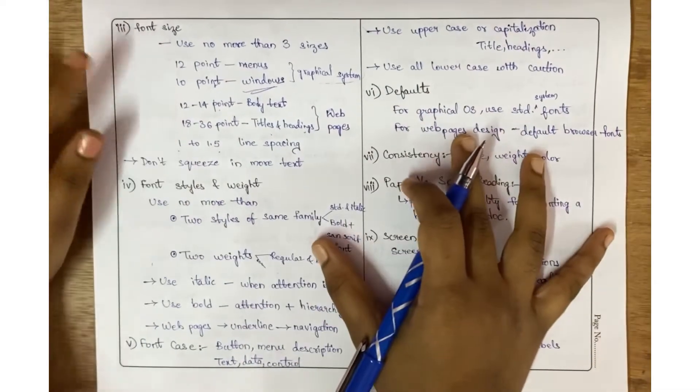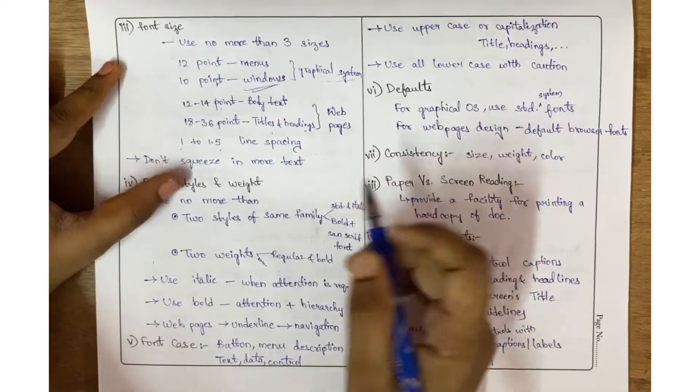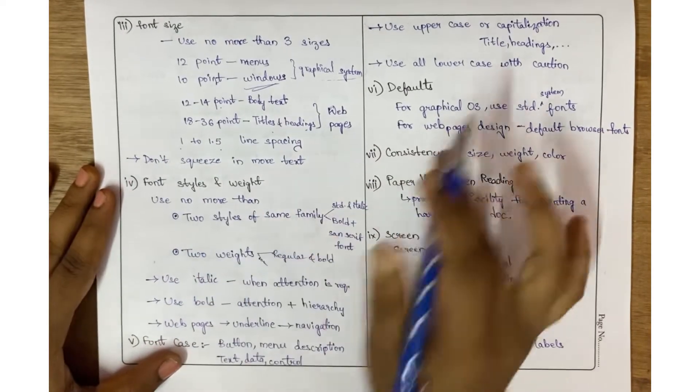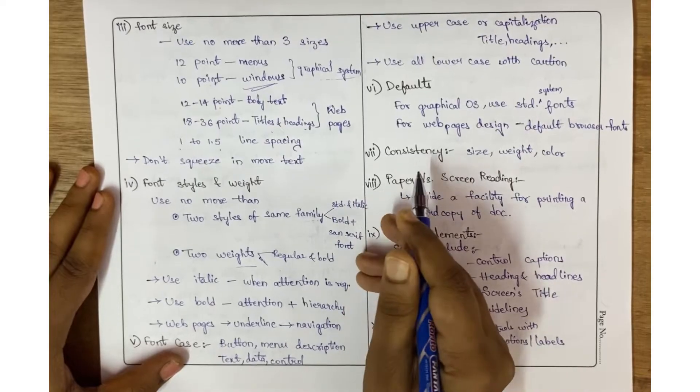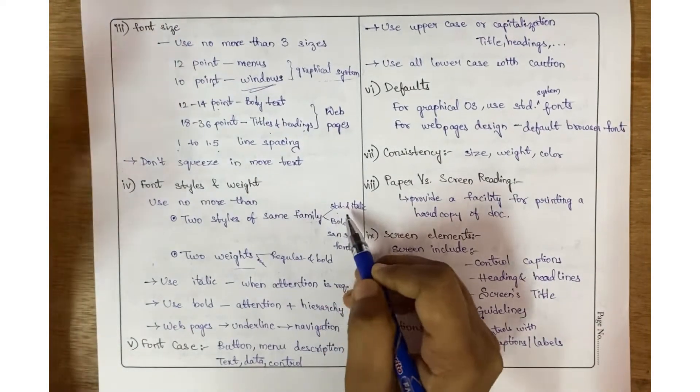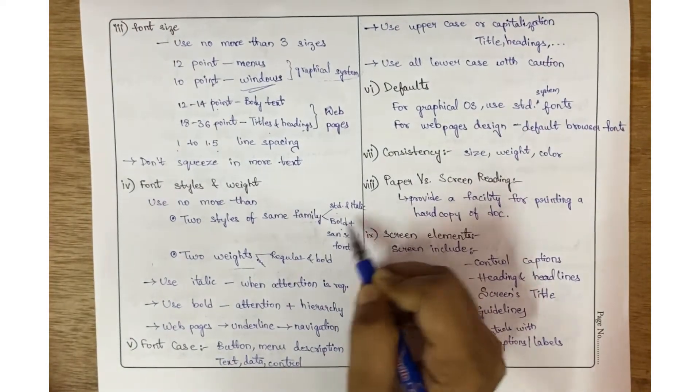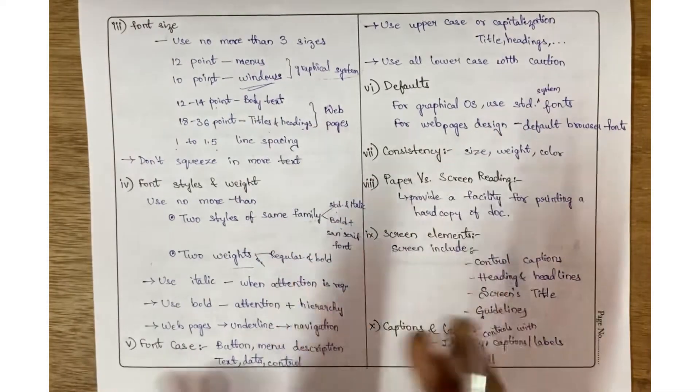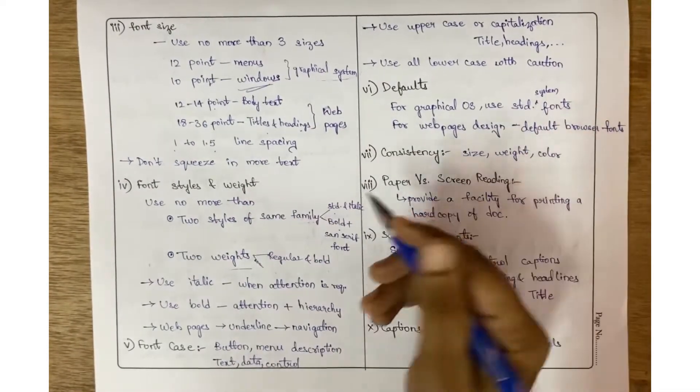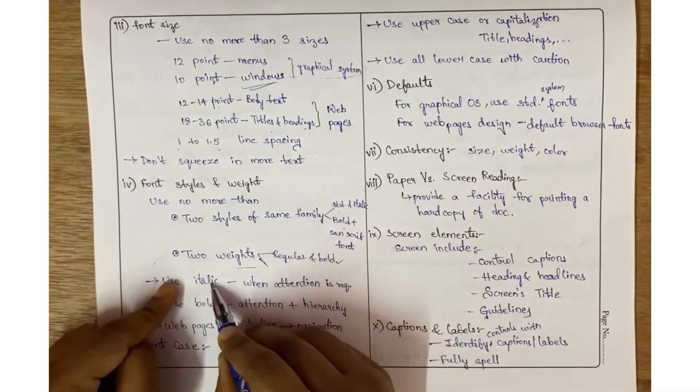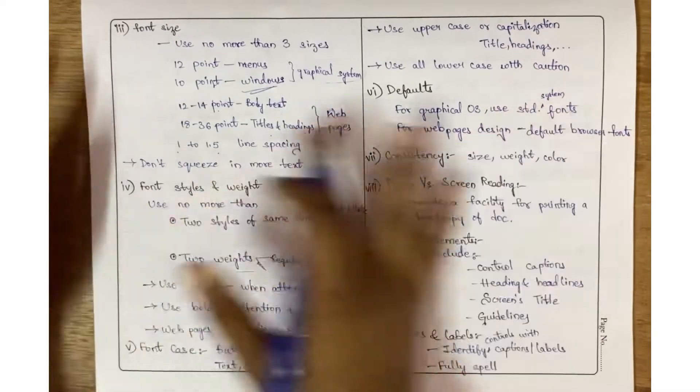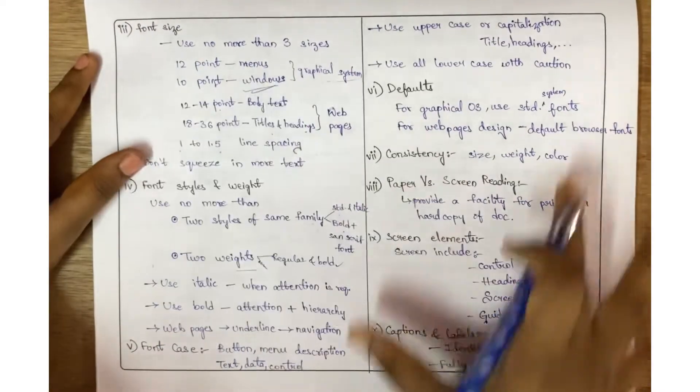Font styles and weight: use no more than two styles of the same family, two weights. You can go with standard, italic, and bold. For combinations they have provided, you can go with regular and bold. Use italic only when you want people's attention on something specific.